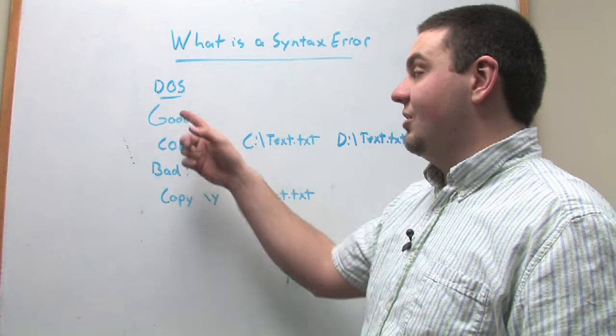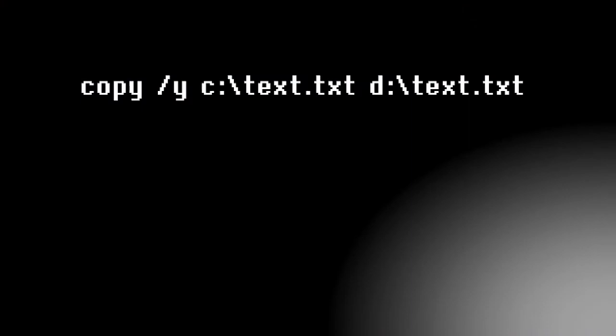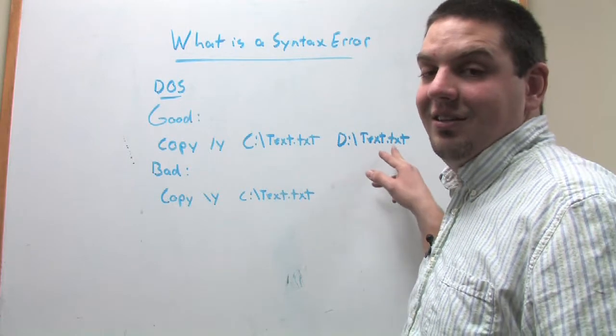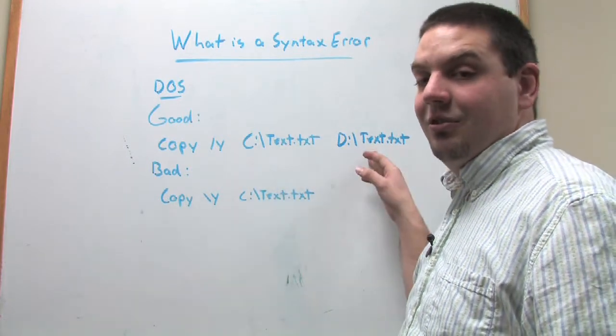For instance, using DOS, this is the example of a good syntax using the copy command with a forward slash y switch with your source as c colon backslash text dot txt and your destination as d colon backslash text dot txt. Essentially what this will do is copy this file to this location.